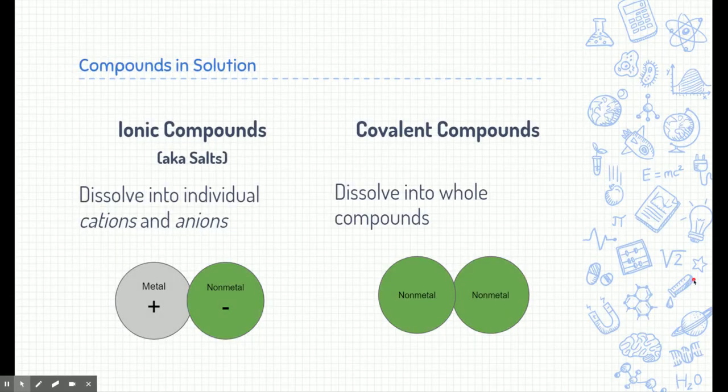So how do compounds act in a solution? There are two different types of compounds: ionic compounds and covalent compounds. Ionic compounds are made between metals and nonmetals. When you put ionic compounds in water, those metals and nonmetals dissolve into their individual cations and anions — positive and negative charges. By the way, many ionic compounds are also called salts. Table salt is one example, but many ionic compounds carry that name.